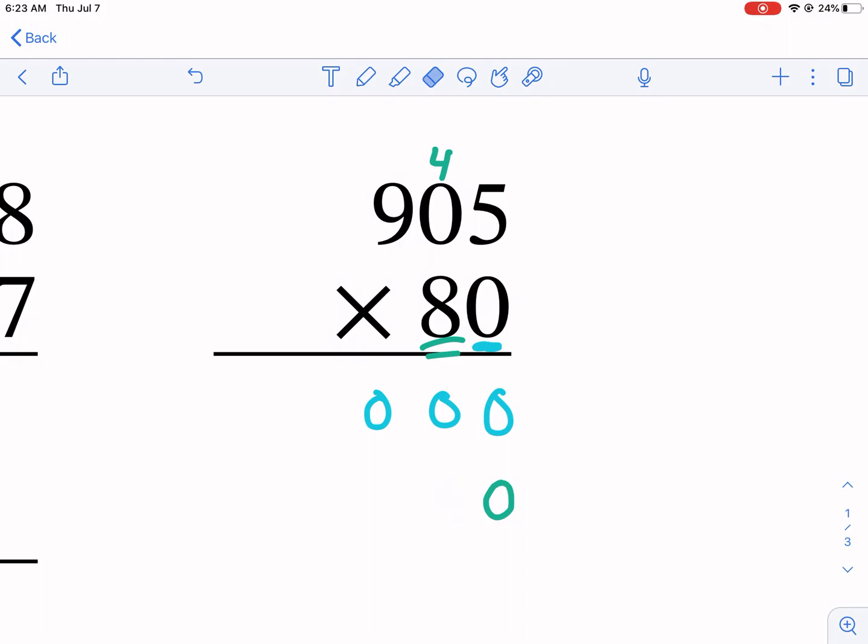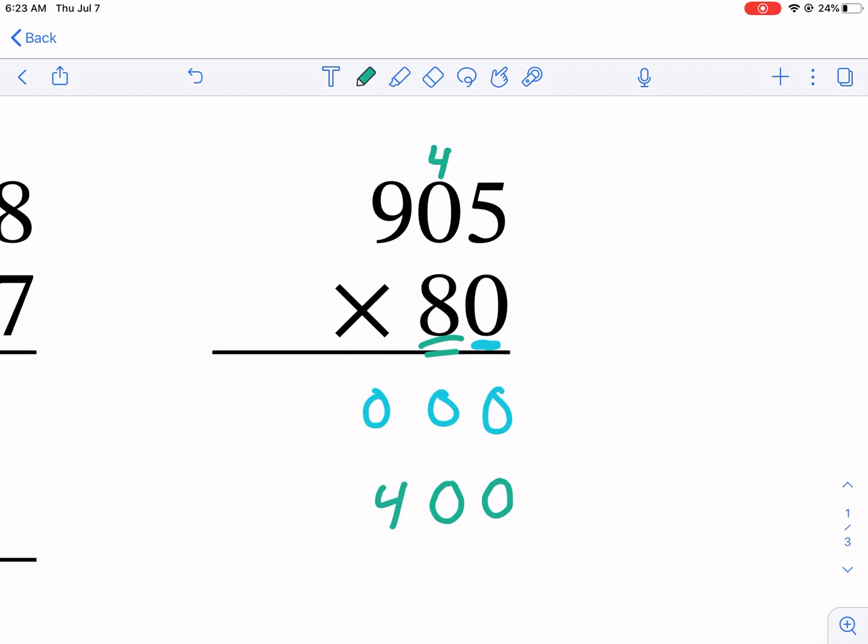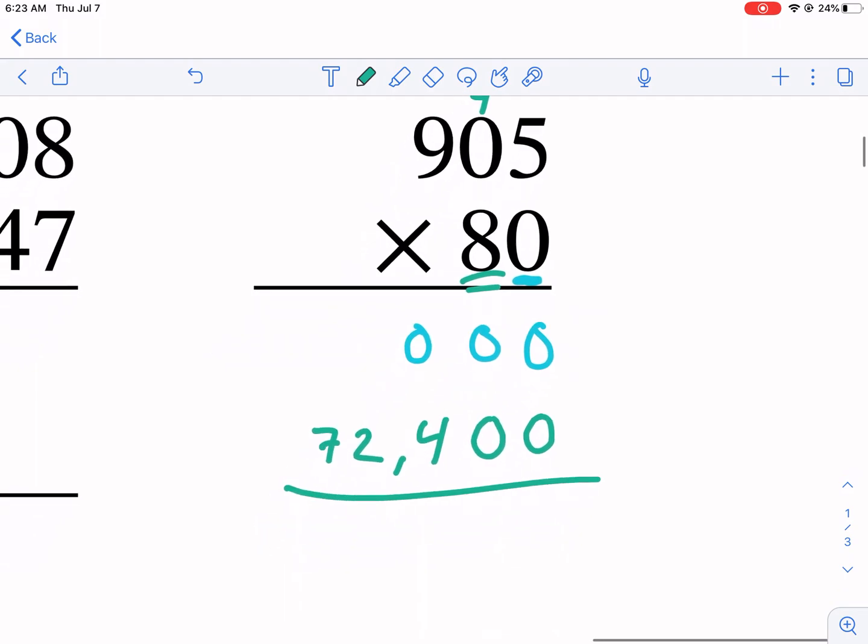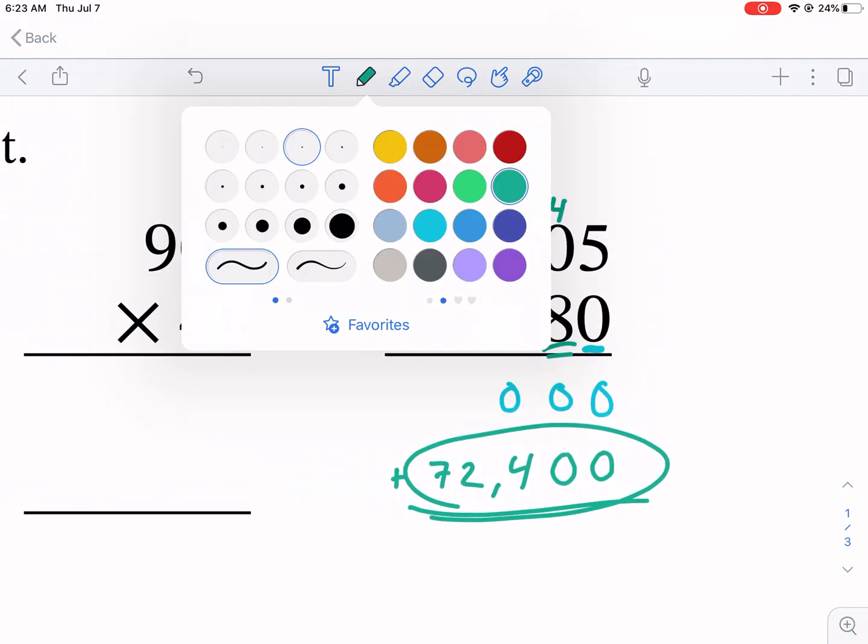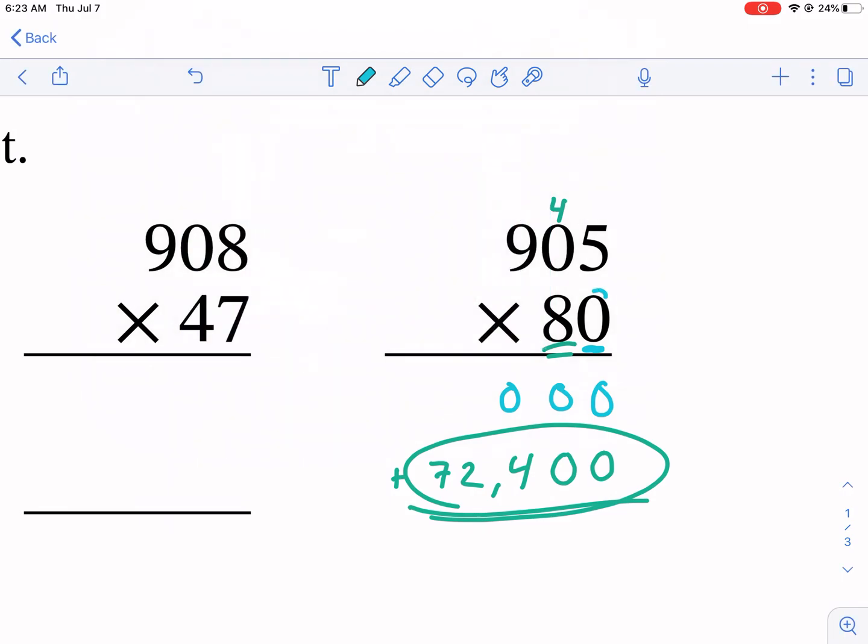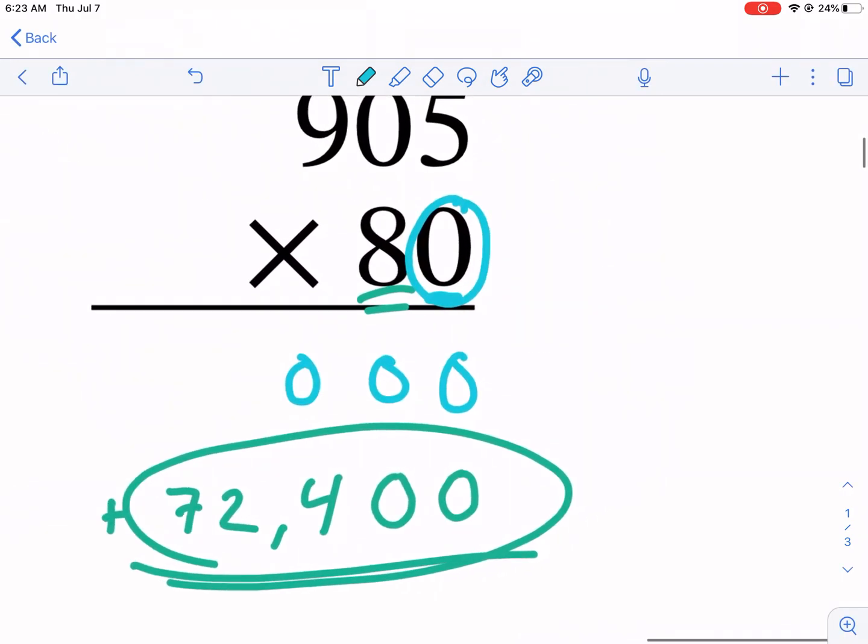8 times 5 is 40 - I write the second 0, then carry the 4. 8 times 0 is 0 plus 4 is 4, and then 8 times 9 is 72. So it should look like that instead. Then we add these two together, and of course we're just going to get 72,400.